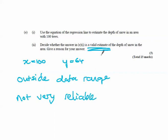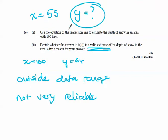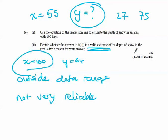If it was inside the range — like the other one, x = 55 — that's fine, that's a good estimate, because it's within those two parameters of 27 and 75, well within there. But 100 lies outside, so it's not a reliable estimate. You have to look at those two things: Pearson's, and whether the prediction we made is within our data range.